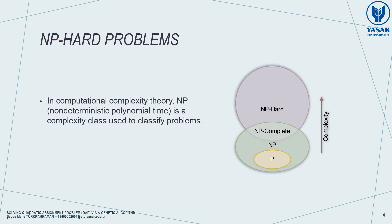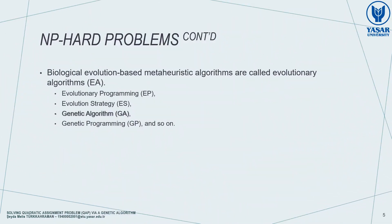In computer science, one way of classifying problems is to classify them according to their computational complexity. NP-hard problems, as you can see in this schema, have a high complexity. They are impossible to be solved in an acceptable time when the problem size increases. For such problems in NP and harder classes, heuristic and meta-heuristic approaches are much more powerful than exact methods to find an optimal solution in a shorter computation time.